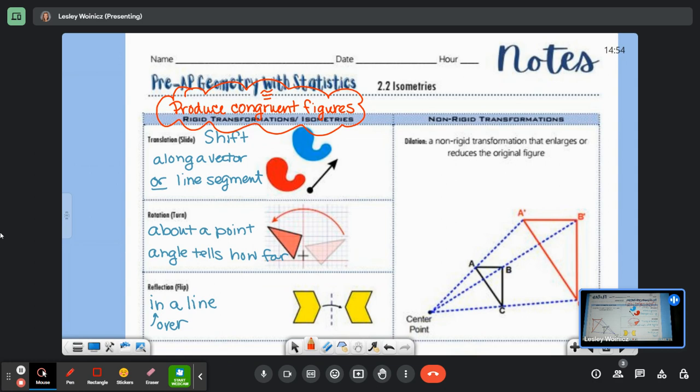Now if it's non-rigid, then we can change the shape, like Play-Doh. Non-rigid, we can change the shape of it and stretch it out. So the example for a non-rigid transformation that we have today is a dilation. These are ones that enlarge or reduce the original figure.